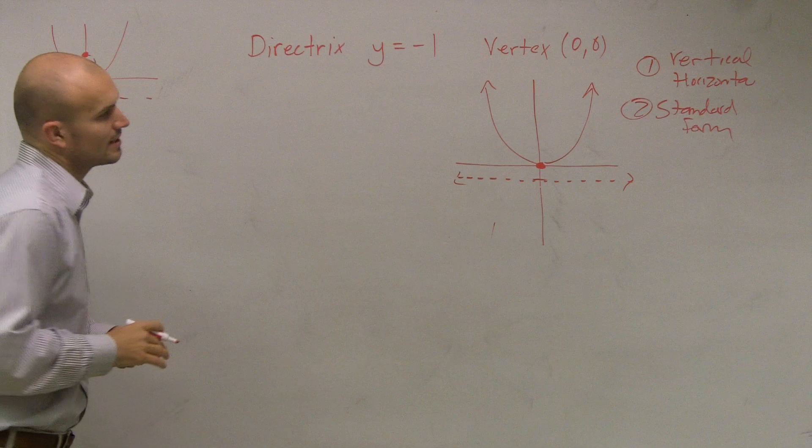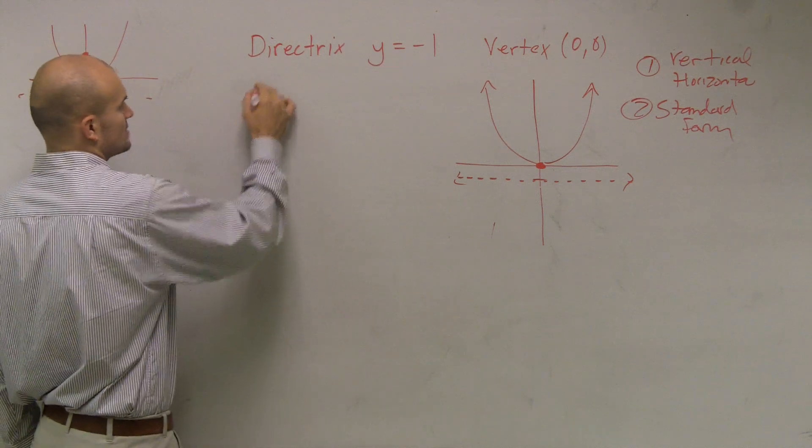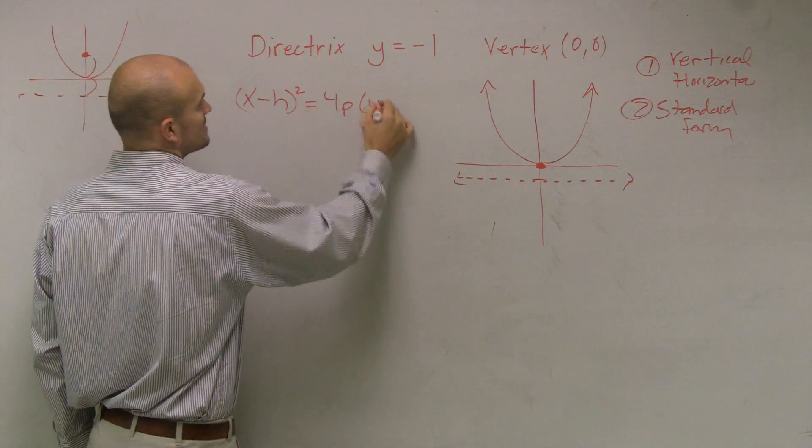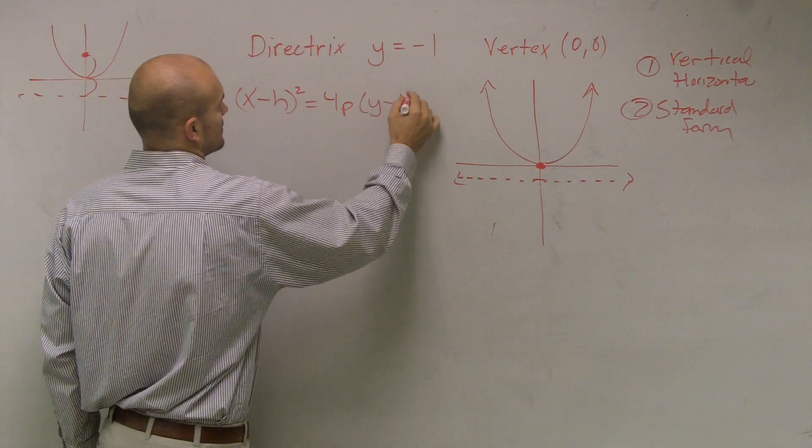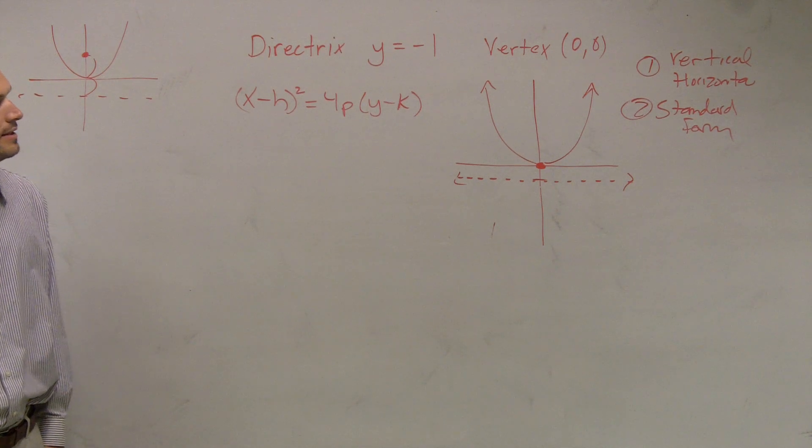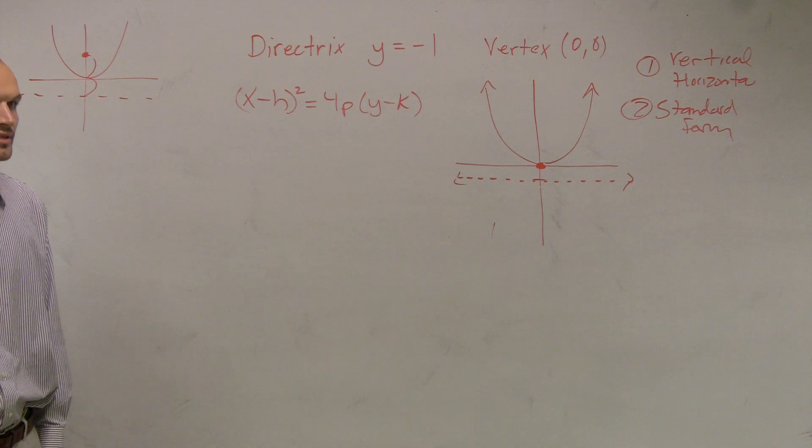To write out the standard form. So the standard form we have, we're going to have a vertical. So that's going to be x minus h squared equals 4p times y minus k.